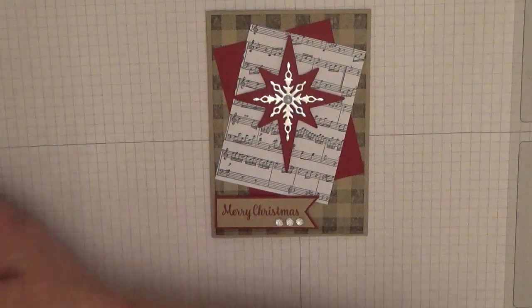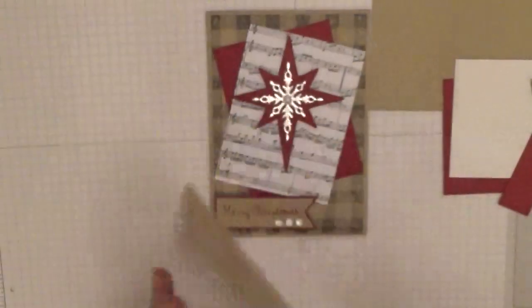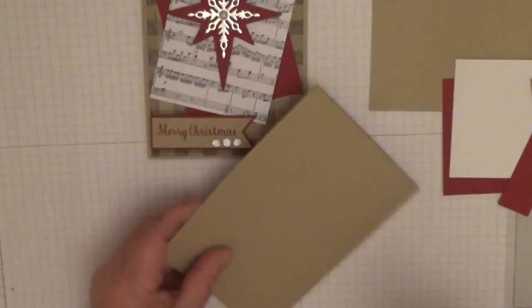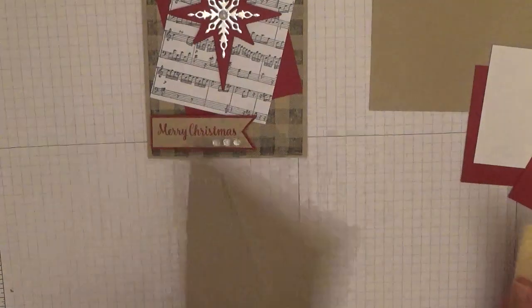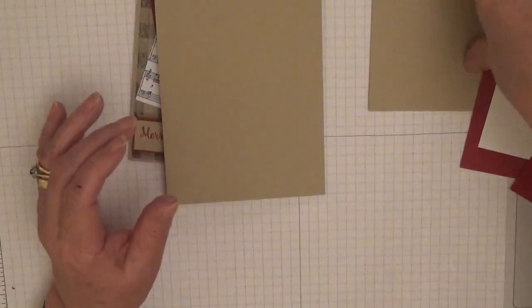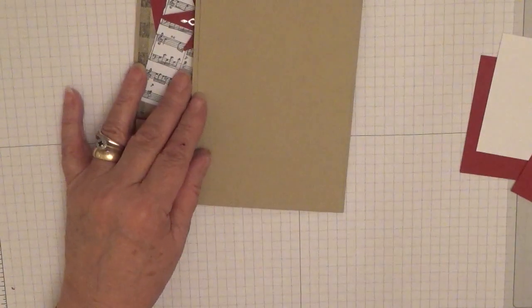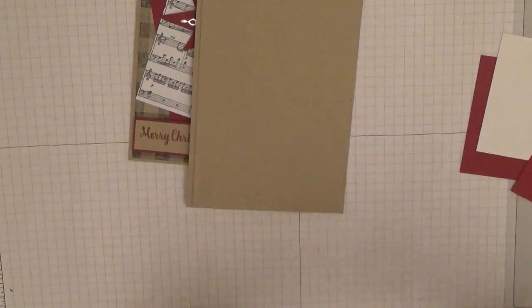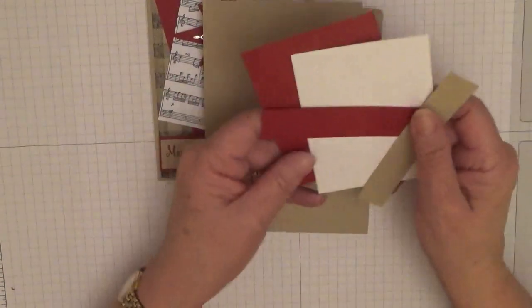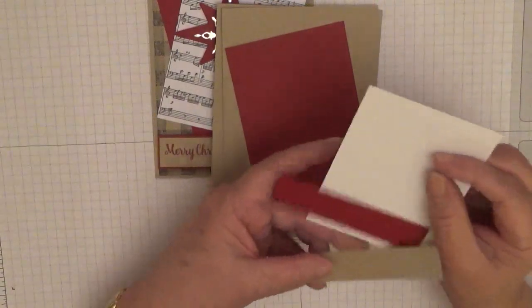For this card you will need a card base of 8 1⁄4 x 5 7⁄8 folded in half and burnished. A piece of crumb cake at 3 7⁄8 x 5 5⁄8, a piece of white card stock at 3 7⁄8 x 5 5⁄8 for the inside, a piece of cherry cobbler at 3 x 4 and a piece of white at 3 x 4.